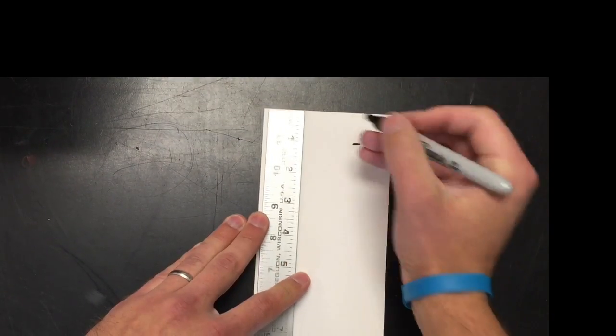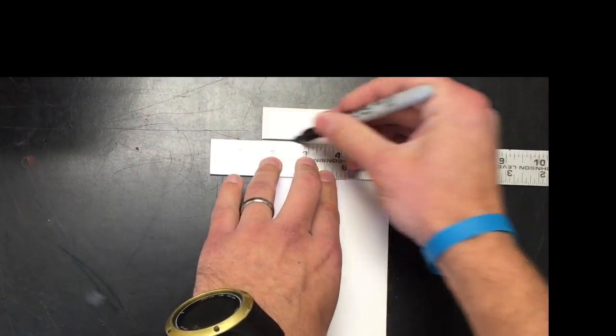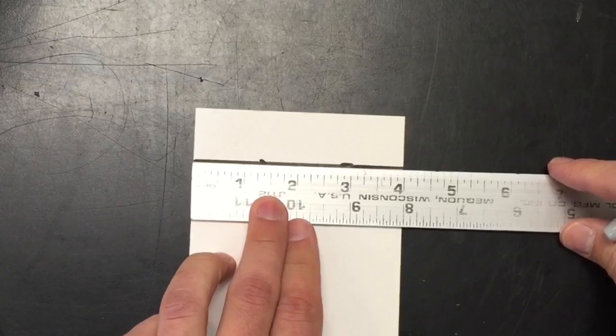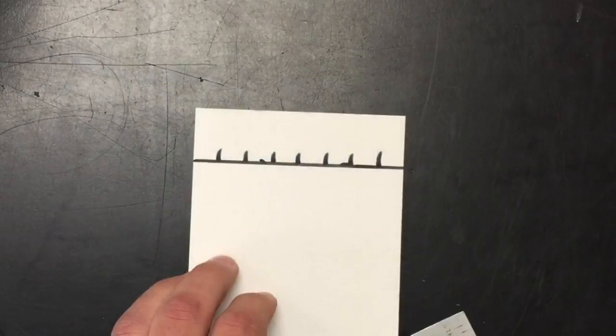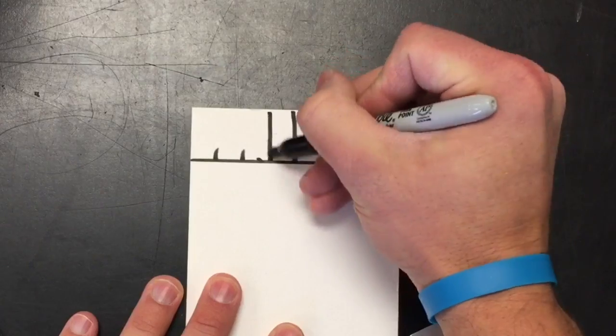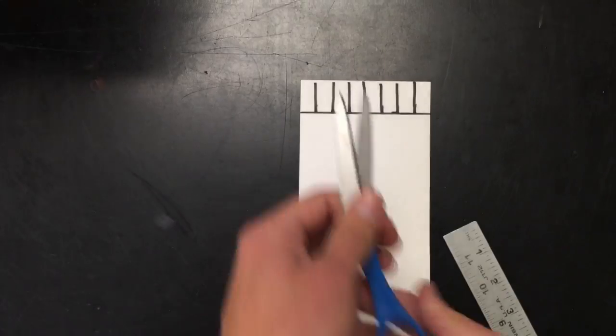This piece of cardstock is gonna be our loom. We're gonna make a horizontal line across the top and then create half inch notches. One half, one, one and a half, two, two and a half, so on and so forth. Then create those lines. This is gonna be where our warp threads go through.